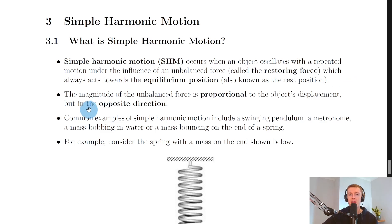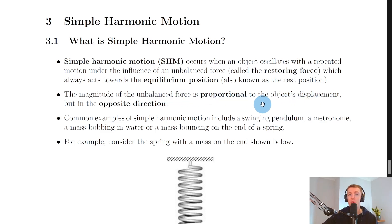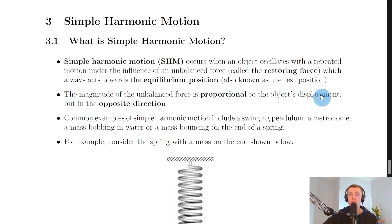In particular, we say the magnitude of the unbalanced force or restoring force is proportional to the object's displacement, but in the opposite direction. So as the object's displacement from its equilibrium position increases, the restoring force acting on the object will increase as well, but in the opposite direction. If you're asked to define simple harmonic motion, you need to mention both the proportionality between the unbalanced force and displacement, and that the force acts in the opposite direction.